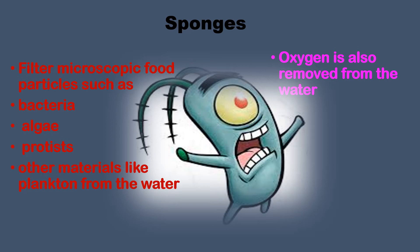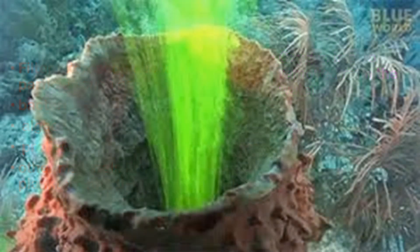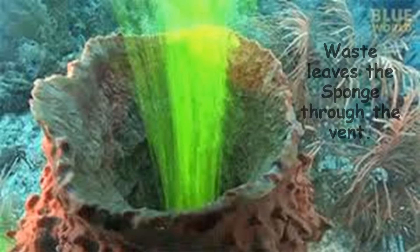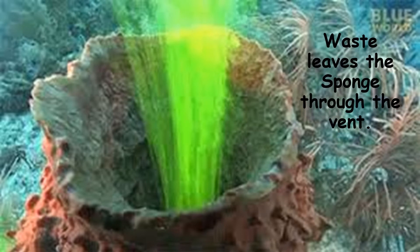Oxygen is also removed from the water at this time. Once the sponge gets everything it needs, waste and other materials leave the sponge's body through an opening called a vent.